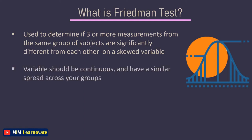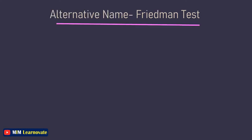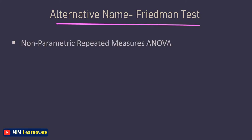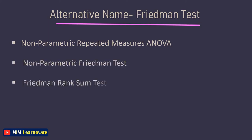Your variable of interest should be continuous and have a similar spread across your groups. Also, you should have enough data — more than five values in each group. The Freedman Test is also sometimes called the Non-Parametric Repeated Measures ANOVA, the Non-Parametric Freedman Test, or the Freedman Rank Sum Test.